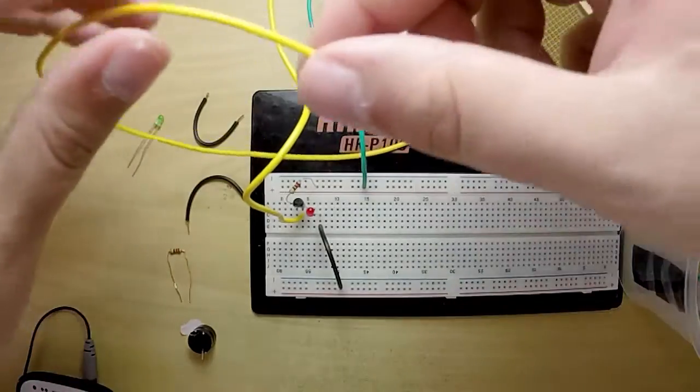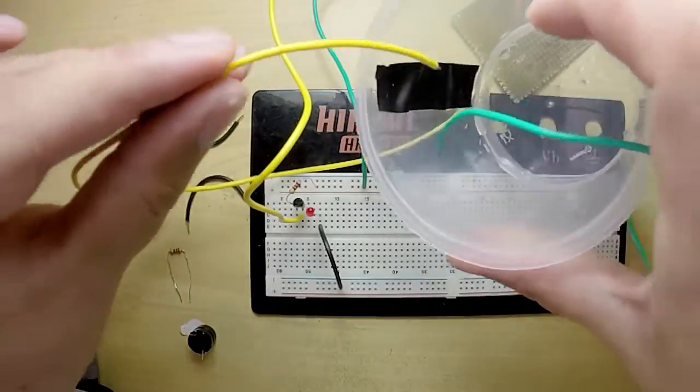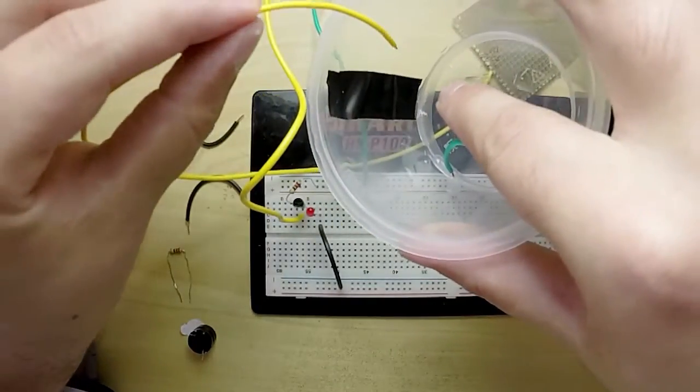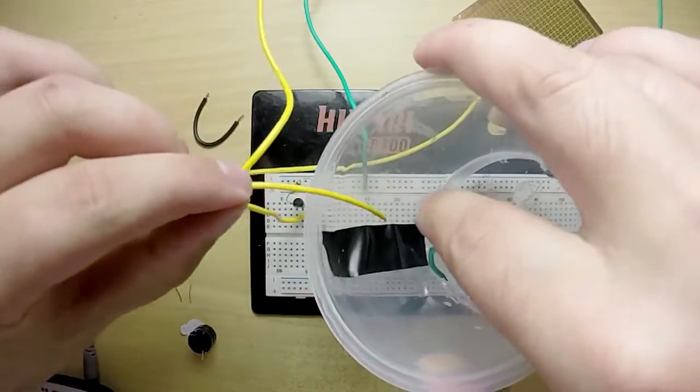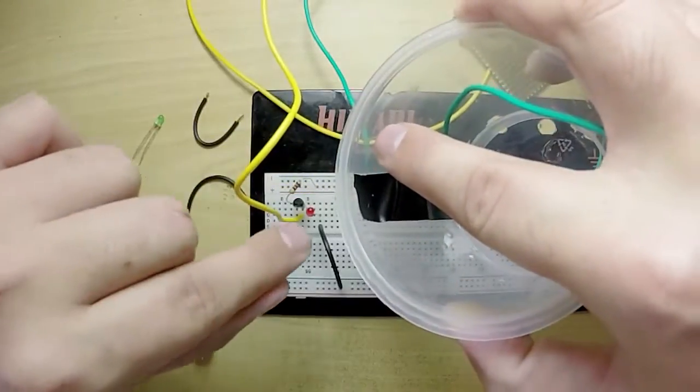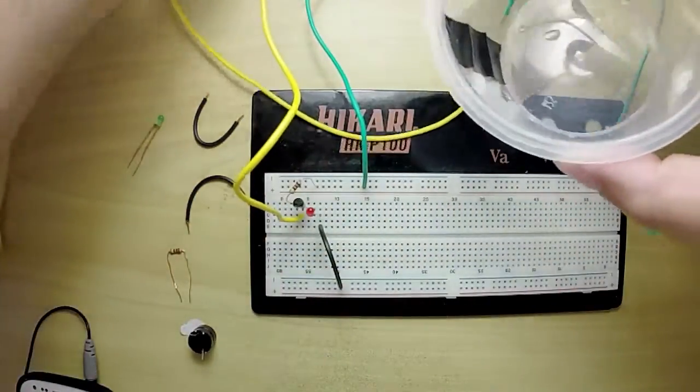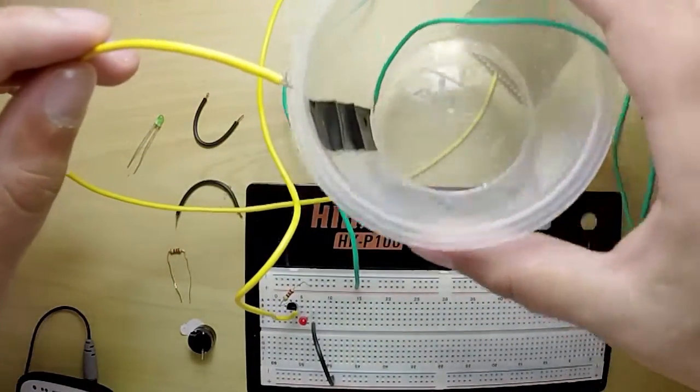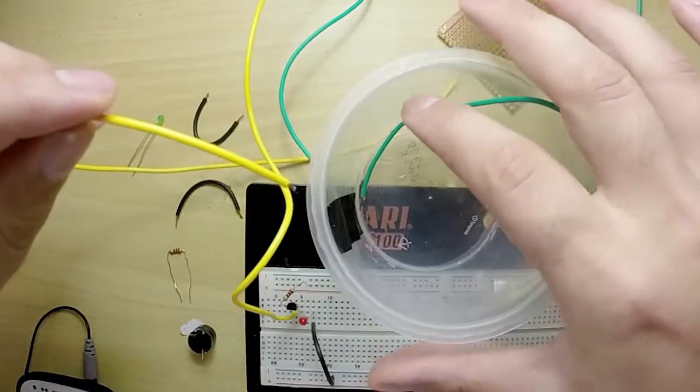This wire I would connect to whatever level I want to be shown. Say it's midway - I would connect it to midway down the bucket here and then that light will light up when the water gets to that level. So we can go ahead and try this out real quick. As you can see, the green wire's at the bottom.